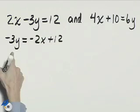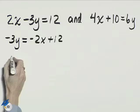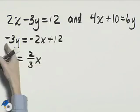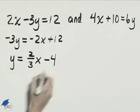And dividing everything through by negative 3 gives us y equals positive 2 thirds x, and 12 divided by negative 3 is minus 4.